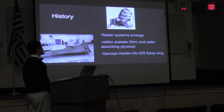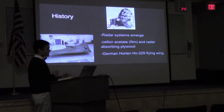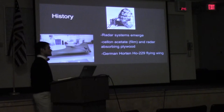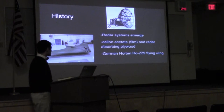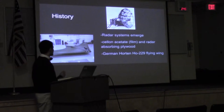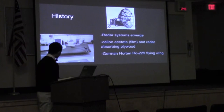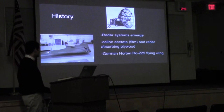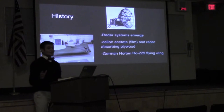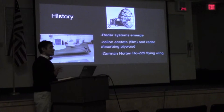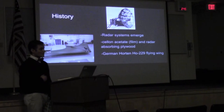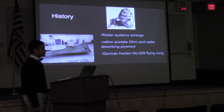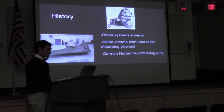The next thing used was radar-absorbing plywood, which was beneficial to the aircraft designs of the day. I also want to point out the German Horten H-229 flying wing, demonstrated in the bottom left-hand corner of the screen. This was an experimental aircraft — the first of its kind — and there were two schools of thought: one said it was primarily designed for aerodynamics, while the other said its shape was a key factor in deflecting radar.